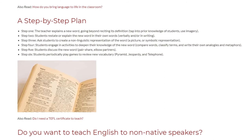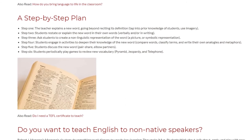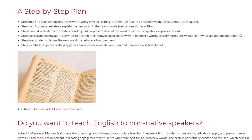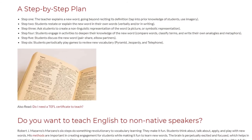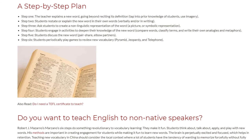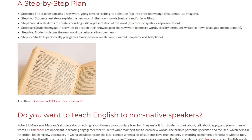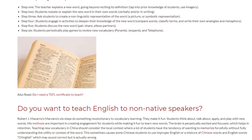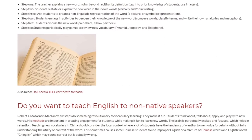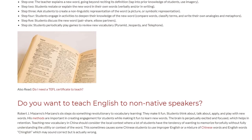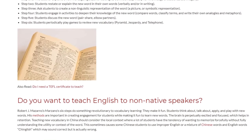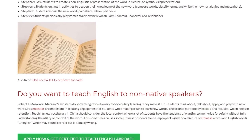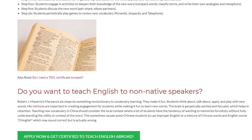Step 6: Students periodically play games to review new vocabulary — pyramid, jeopardy, and telephone. Robert J. Marzano's 6 steps do something revolutionary to vocabulary learning: they make it fun. Students think about, talk about, apply, and play with new words. His methods are important in creating engagement for students while making it fun to learn new words.